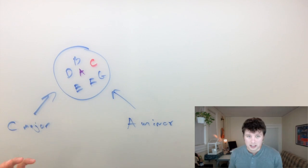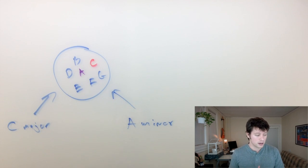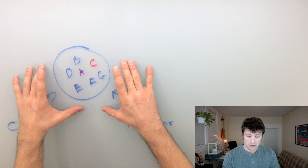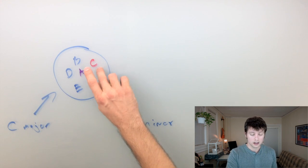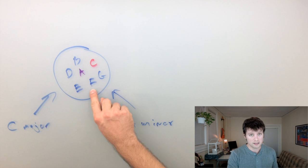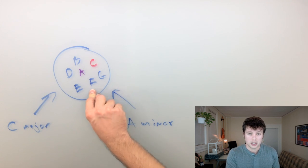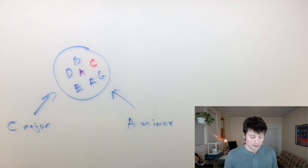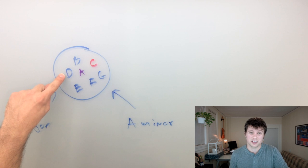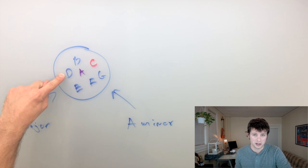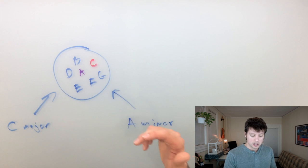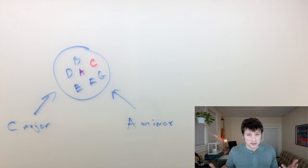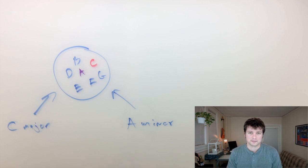As kind of a bonus, if you're thinking about modes: if you take these same seven notes and instead of making A the key center or C the key center, you pick F — then you're playing what's called the F Lydian mode. If you make D sound like the key center, you're playing D Dorian mode. That's the whole idea of modes. In fact, C major and A minor are modes too — that's kind of what a mode is.